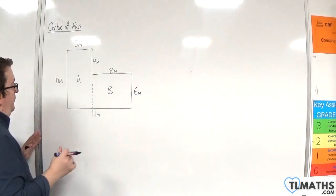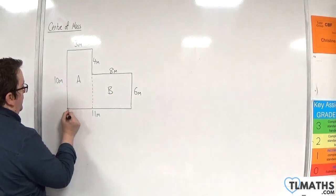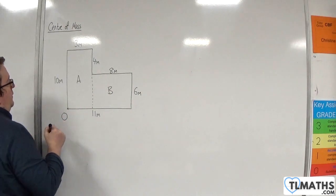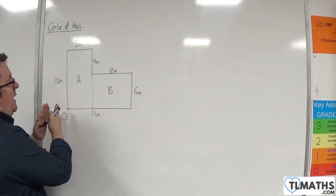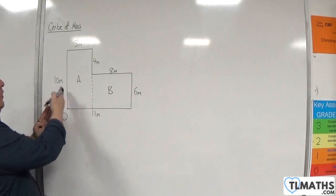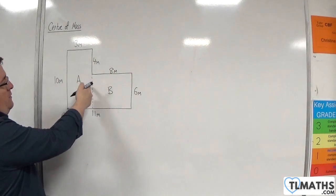Now I'm going to choose this corner to be O. So essentially this is kind of like your origin. And then we could work out the coordinates of the center of mass, which is probably going to be somewhere over here, isn't it?